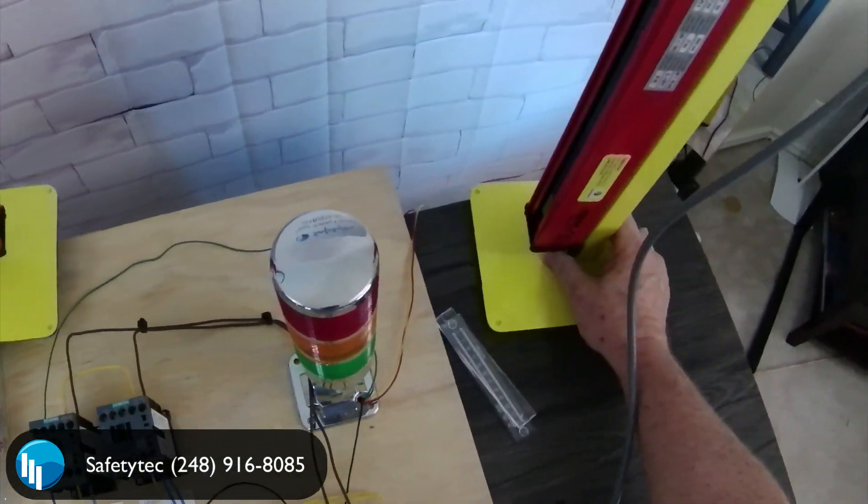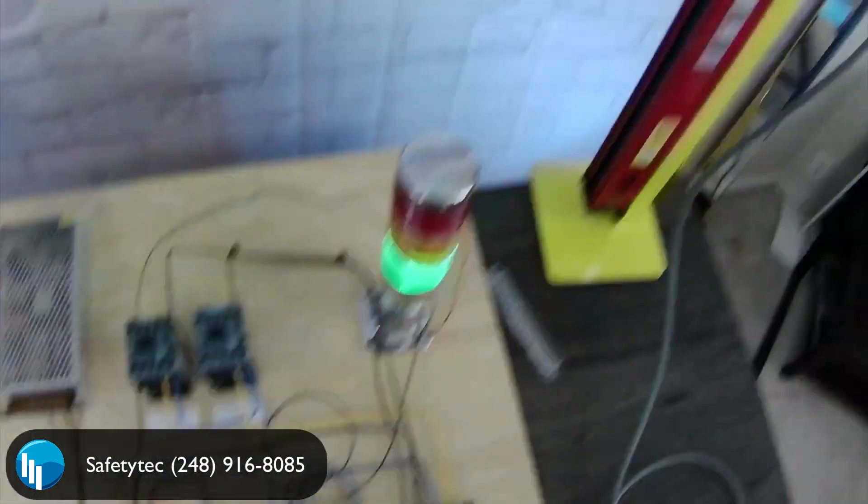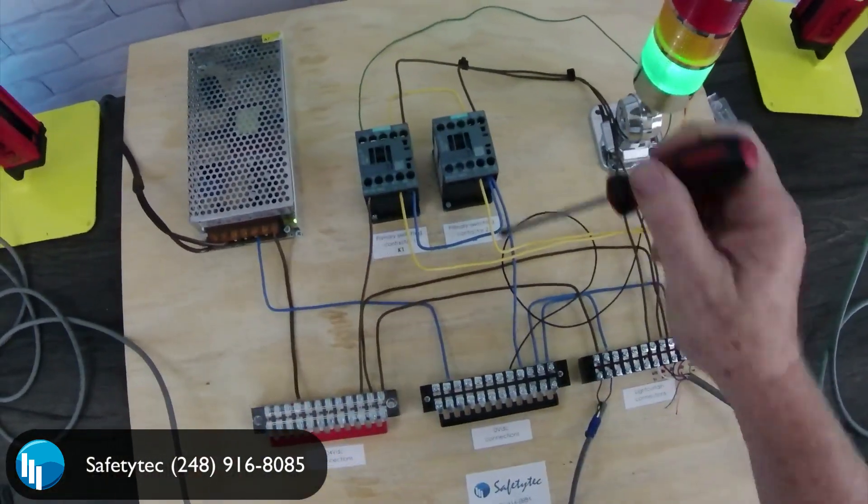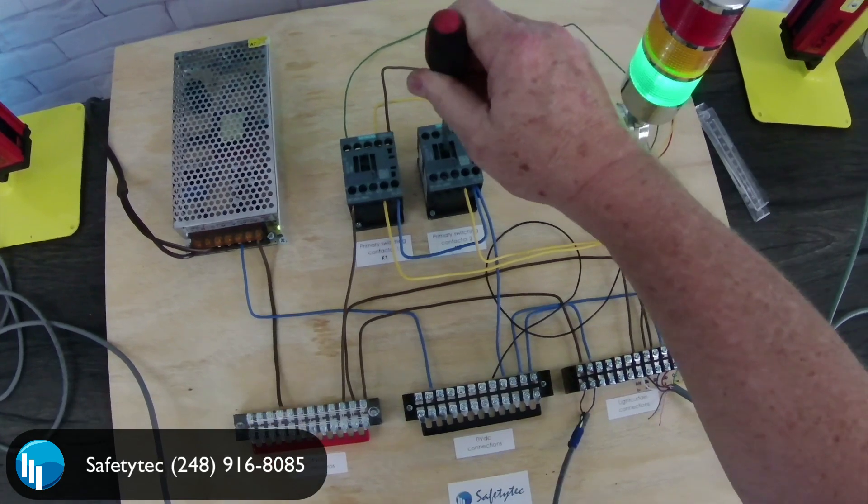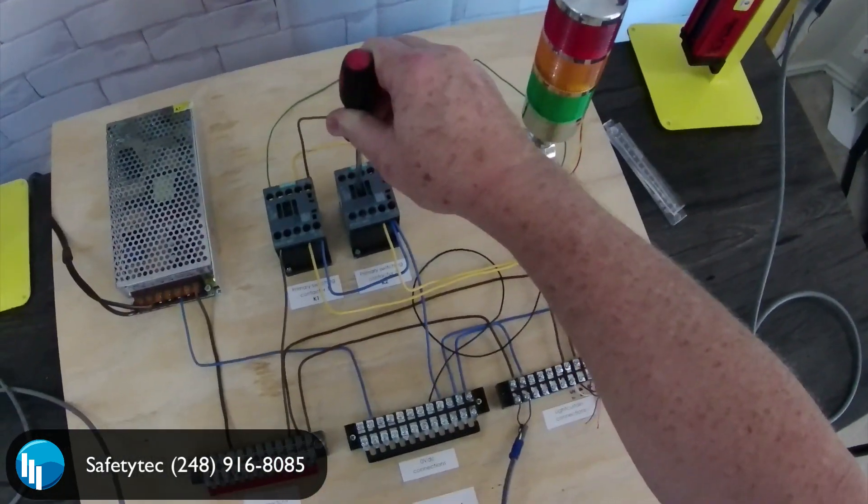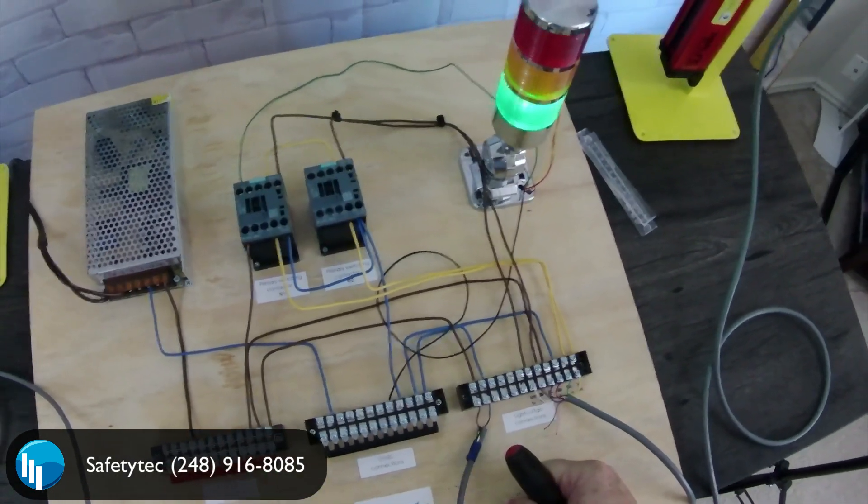I think there's lights in the way. There you are. System functioning. And to show you the EDM circuit is working, if I jam this contactor in place, you can see it doesn't work. The light curtain has detected that this contactor has failed and won't start the machine until it's fixed.